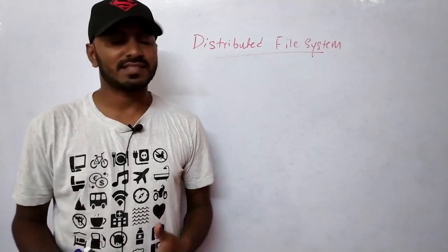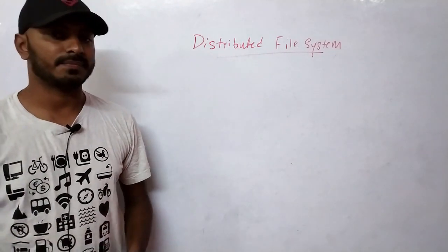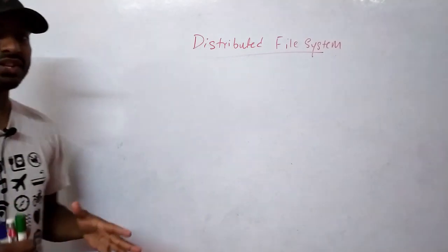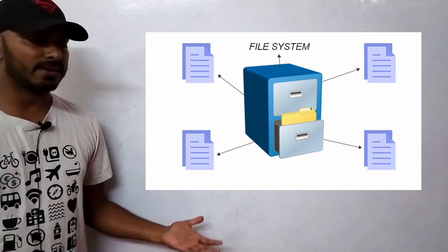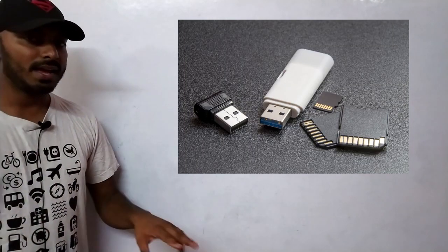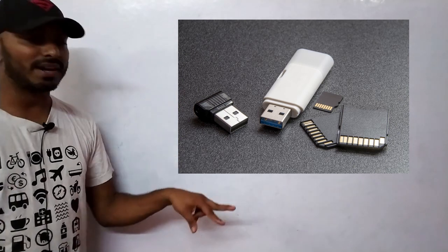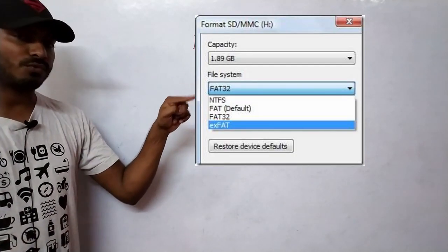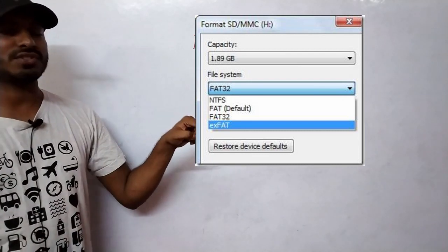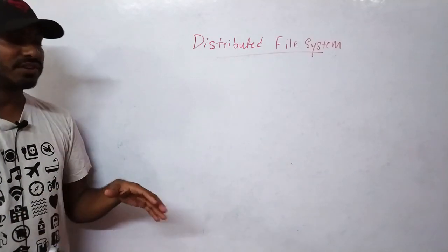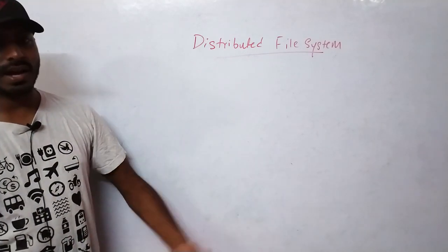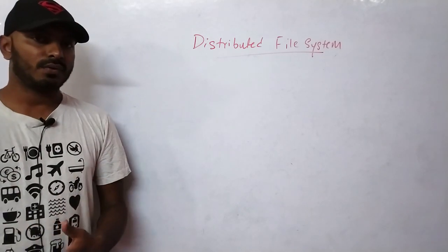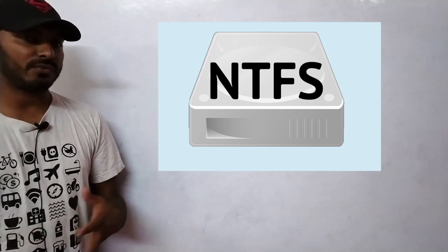In this video, let's learn about distributed file systems. Before that, we need to understand file systems first. You would have heard about NTFS, xFAT, and FAT — maybe when you try to format a pen drive or disk, you get the option to select a file system. NTFS stands for New Technology File System, which was developed by Microsoft for Windows.